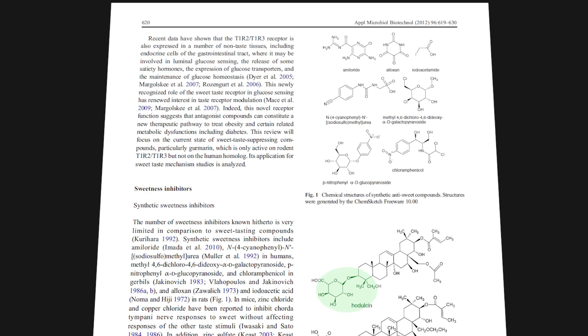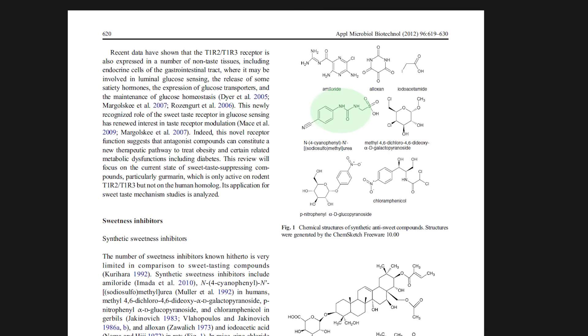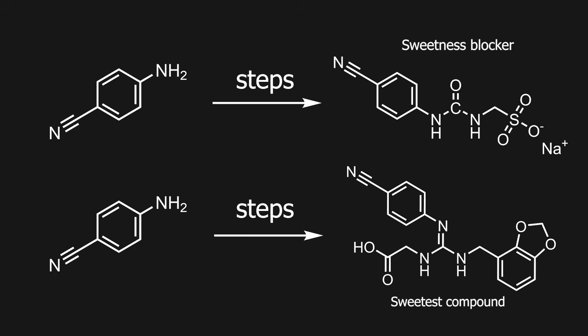That leaves me with two options: this urea molecule, or the most known sweetness inhibitor, lactisole. Since lactisole is already known, occurs naturally, and has kind of an uninteresting structure and synthesis, I decided to go with the lesser known urea molecule. Ironically, it involves the same molecule used to make the sweetest compound, lactamate, so there's definitely some structural relation there.